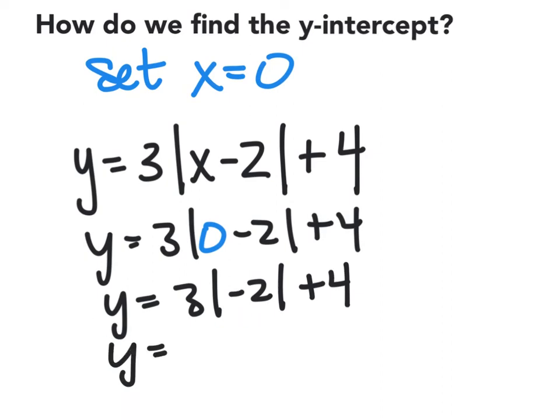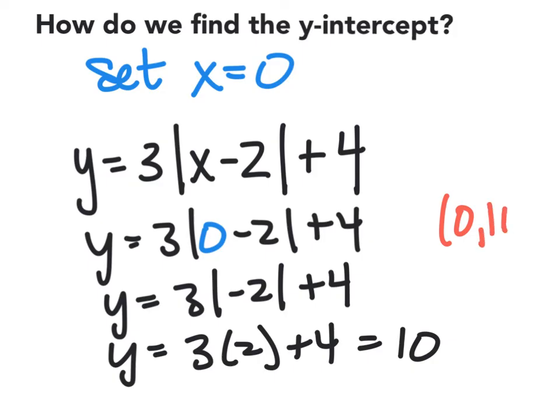It's positive 2. So now we have 3 times 2 plus 4. Notice that these turn to parentheses once I took the absolute value. And I'm just indicating that I need to multiply. 3 times 2 is 6 plus 4 equals 10. So this has a y-intercept at (0, 10).